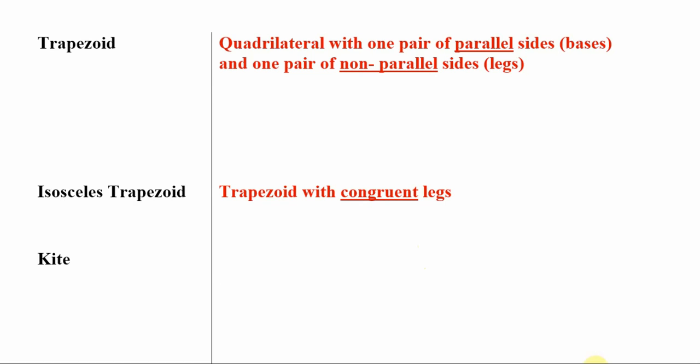So a trapezoid is a quadrilateral with two parallel sides and two non-parallel sides. The parallel sides, we call them bases, and the non-parallel sides, we call them legs. In an isosceles trapezoid, we have the legs being congruent to each other as well.